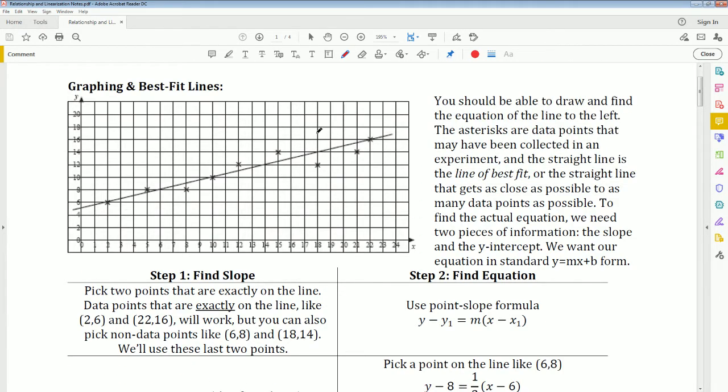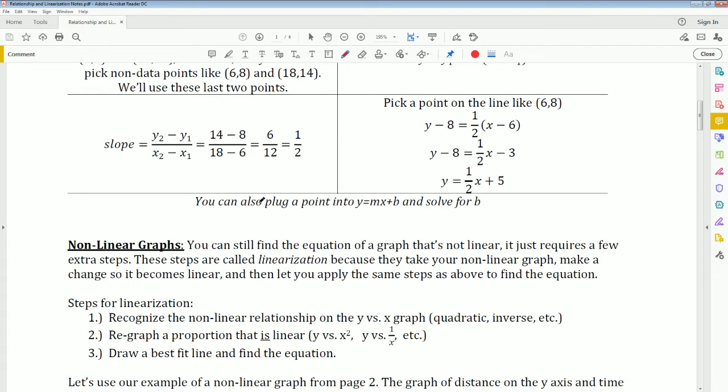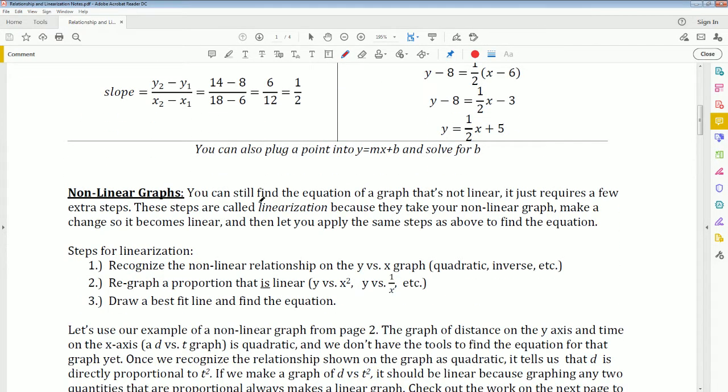This is a very unique case where it is linear. The situation arises in AP physics where it is not linear, so we have to deal with non-linearized graphs. We are going to do something called linearization. Linearization takes a nonlinear graph and makes it linear. To do this there are three steps.